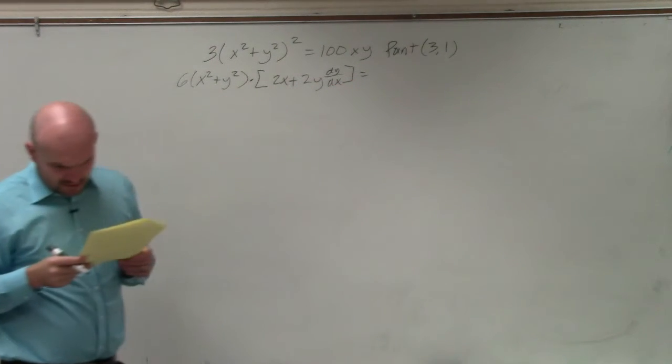Now I'm going to multiply these portions out — basically distribute all the way through. I end up with 12x times (x² + y²) plus 12y times (x² + y²) dy/dx, and that just remains. Then distributing the 6x² and 6y² terms, I need to rearrange my terms. So by rearranging, I get 12y(x² + y²) dy/dx minus 100x dy/dx equals 100x dy/dx plus 100y.